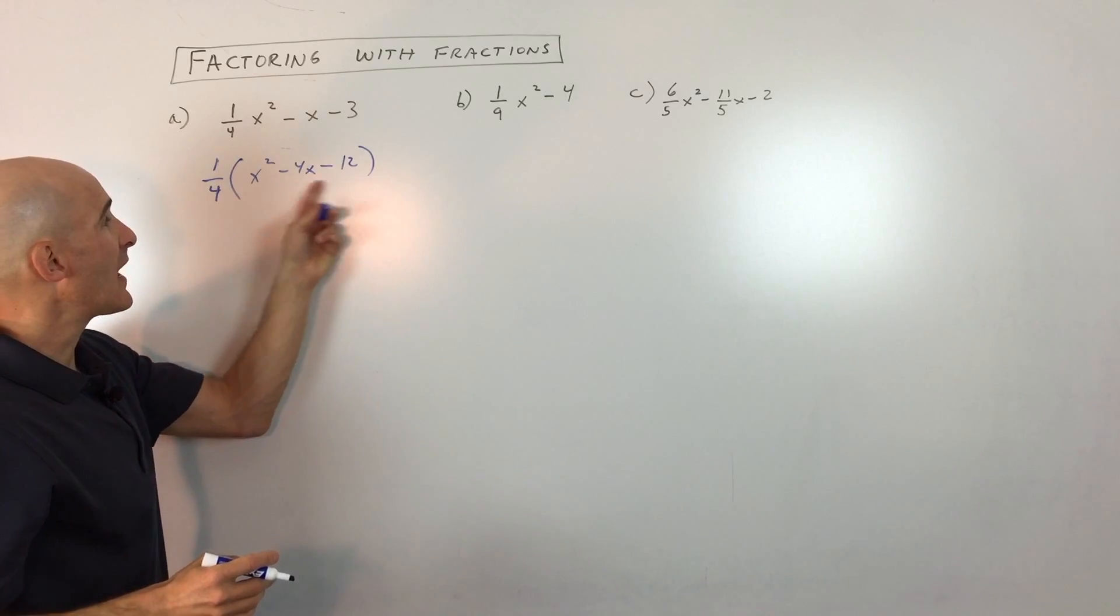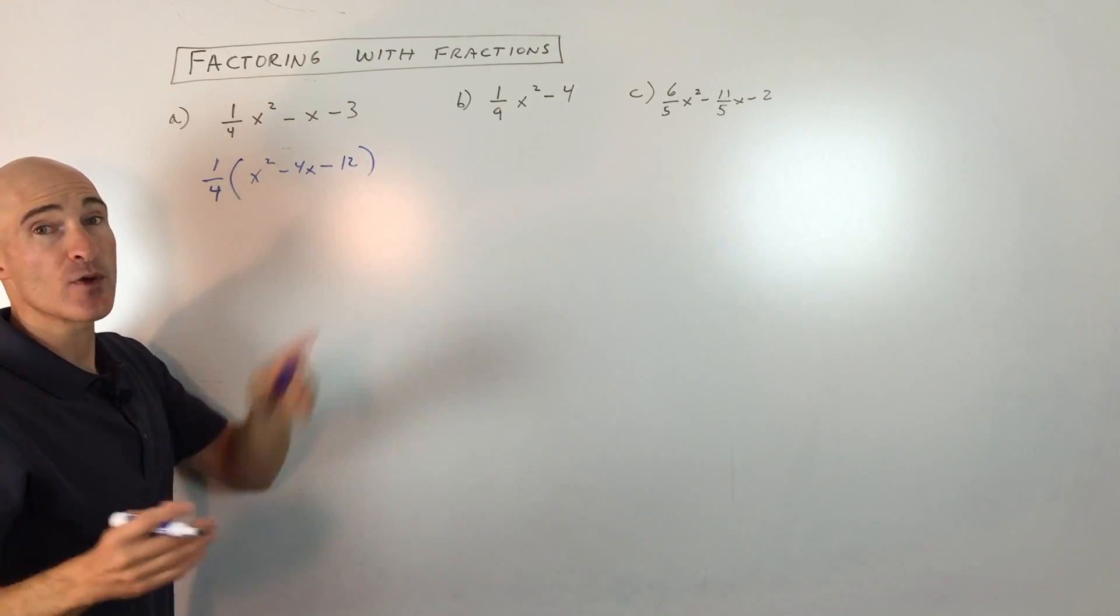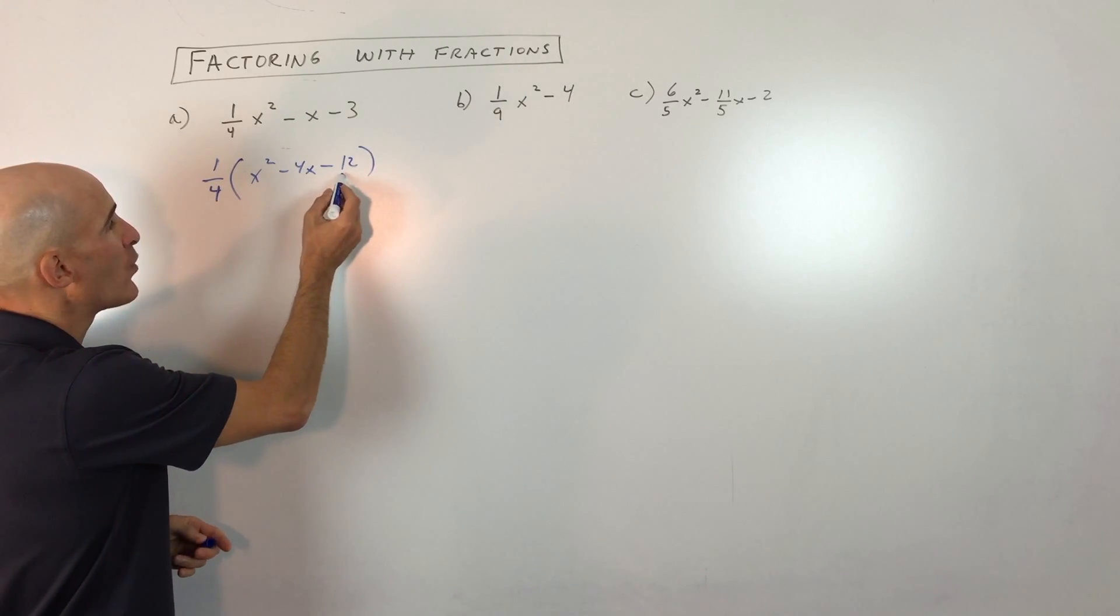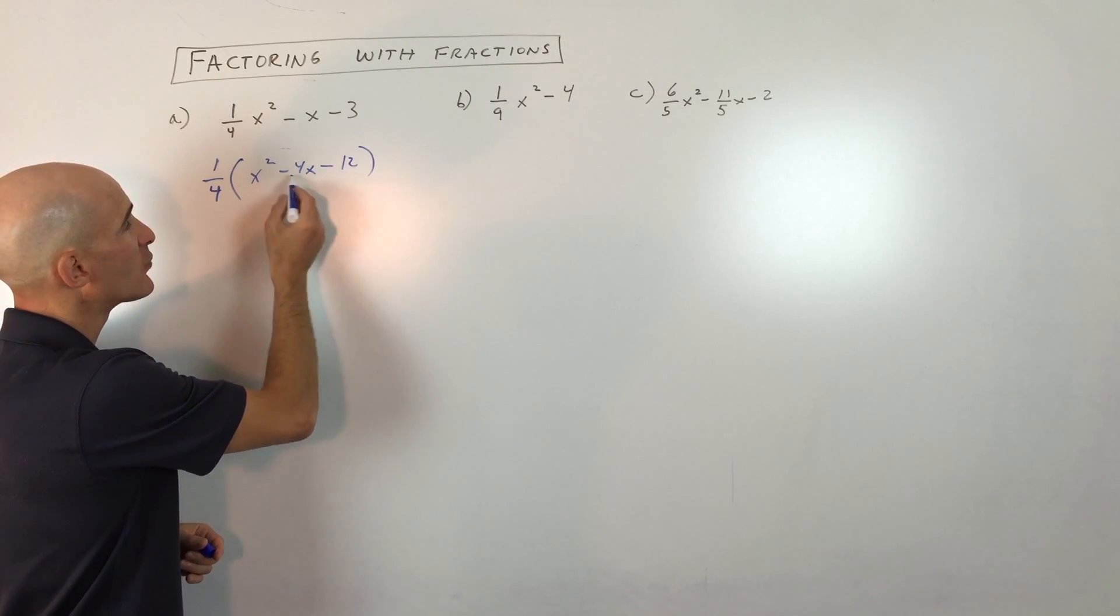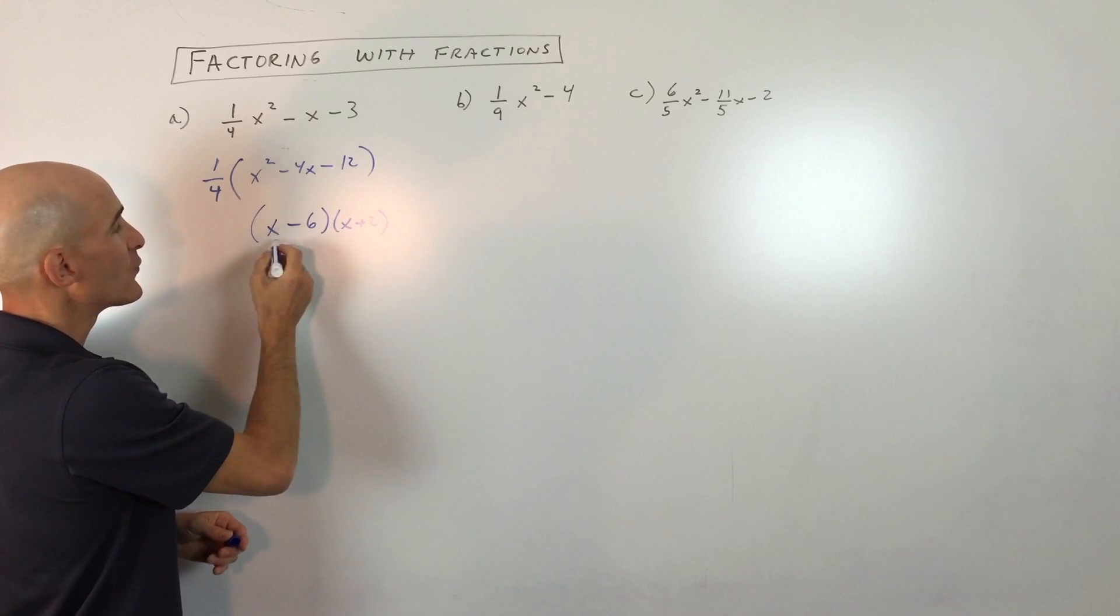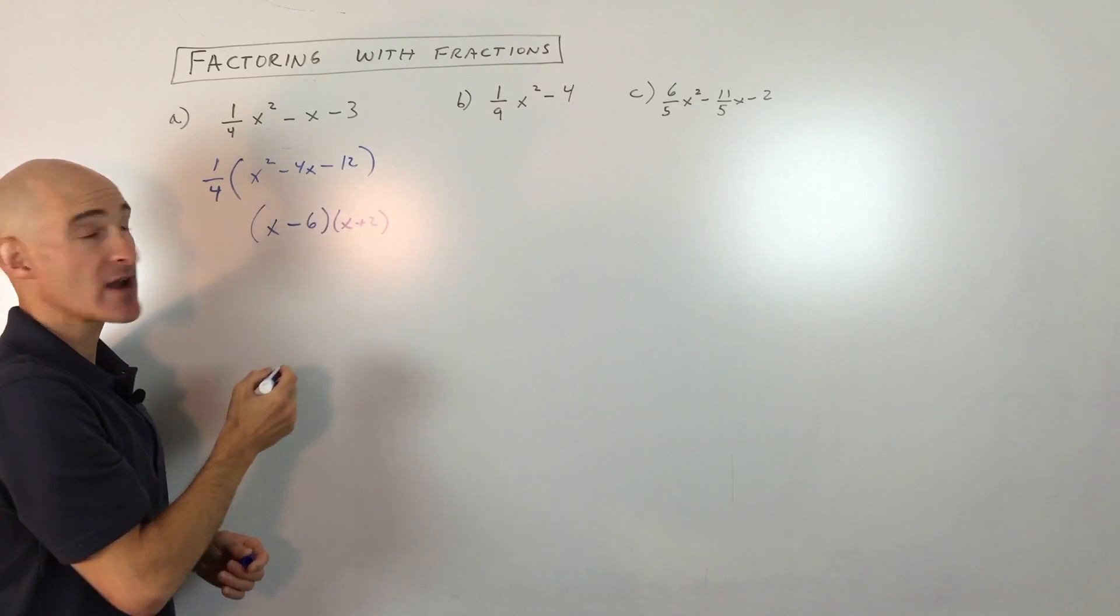Now you can see we have just integer coefficients in here, but we're not done yet. We want to see if you can keep factoring. So here we have to say what two quantities multiply to negative 12 but add to negative four. And you can see that that's going to be negative six and positive two. So if you were to multiply these together, you're going to get back this trinomial.